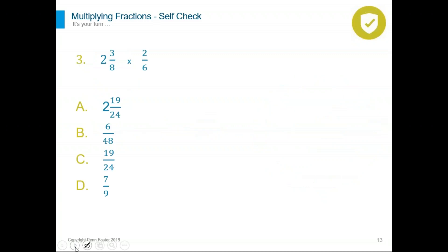Practice question: write down the problem. We have a mixed number times a fraction. Can we just go ahead and multiply, or do we have to do a step to prepare our problem first? Let's do the problem together. We have a mixed number and multiplication, so we have to change it to an improper fraction. Two times eight is 16, and 16 plus three is 19 on top and eight in the denominator. The second fraction is just a fraction — not a mixed number — so it stays as is.